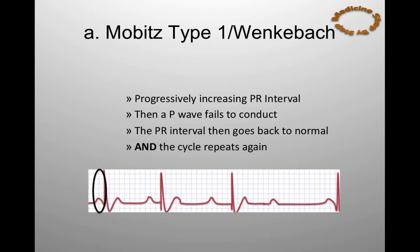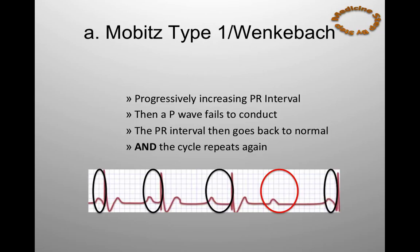Here I've circled the first PR interval. You can then see, as I've circled, each PR interval becomes wider until the P wave fails to conduct and the QRS complex is dropped, as I've circled here in red. After the dropped QRS complex, the next PR interval is back to normal, like the first PR interval, and the cycle repeats itself again.